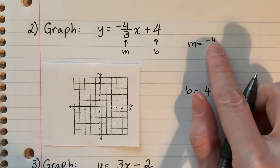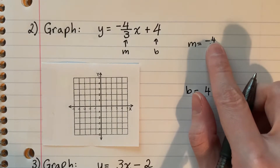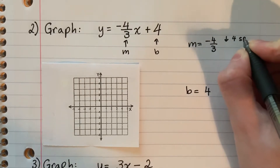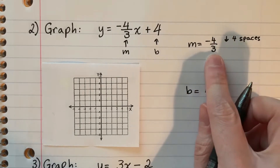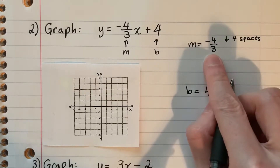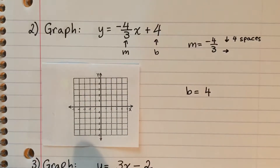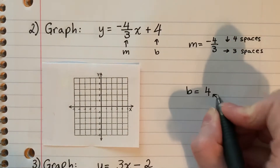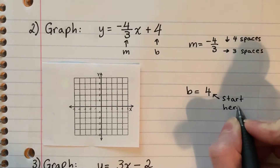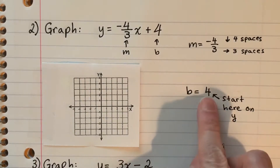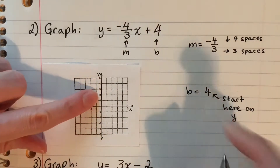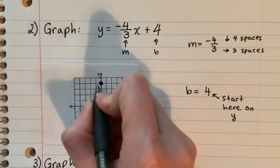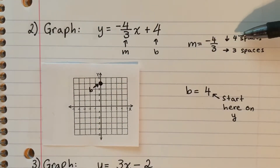This number is negative — negative means down — so I'm going to go down four spaces. The denominator three is always to the right, so I go to the right three spaces. My y-intercept b is positive four, so I find positive four on the y-axis — one, two, three, four — and that's where I start. I put a big point there.